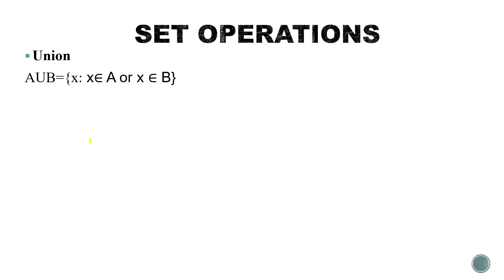Let's start with set operations. The first operation is Union. What does union mean? If we have two sets, union is the combination of those two sets. Let's look at the mathematical representation: A union B, where A and B are two sets, and their union is represented as A union B.